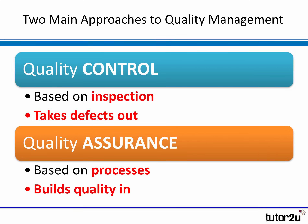Quality control is an important part of the overall strategy of how a business manages its quality. There are two main ways of doing this. One is quality control, which is about inspection — inspecting products and trying to take the defective products out. The alternative is quality assurance, which isn't about inspection; it's about putting business processes in place that assure the quality of output, trying to build quality in rather than relying on inspection to take defects out.